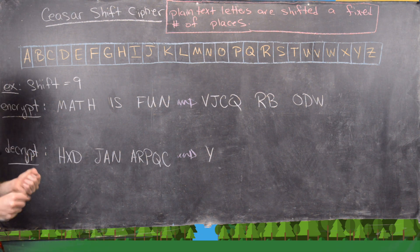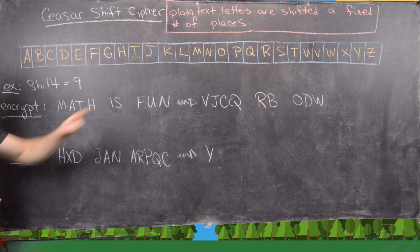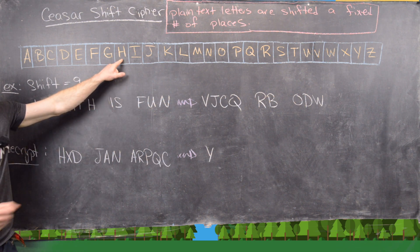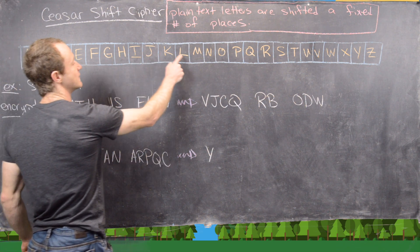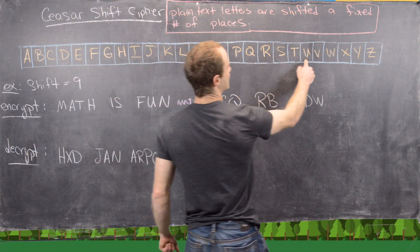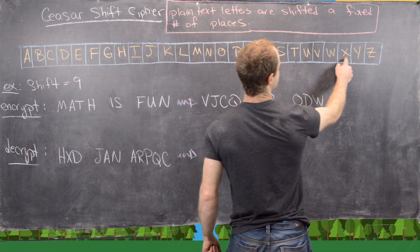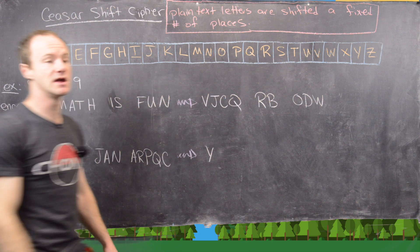Counting 26 is like counting all the way around the alphabet. Let's just check that — if we start at H and count forward 17, we get Y. So counting back 9 and counting forward 17 give the same result.